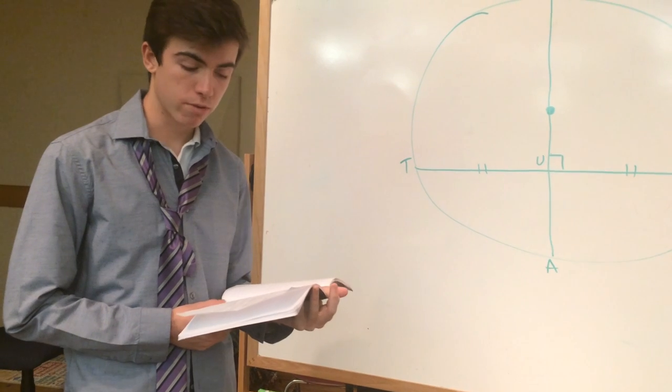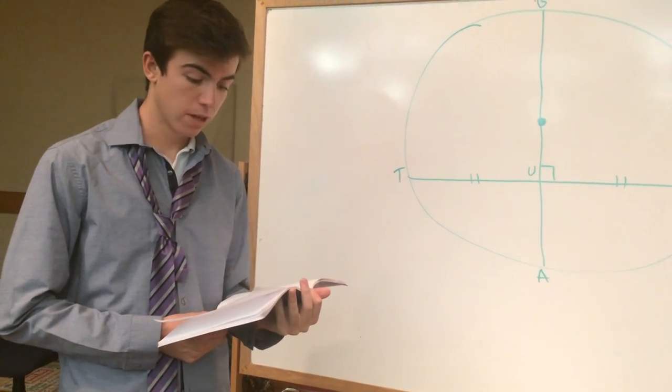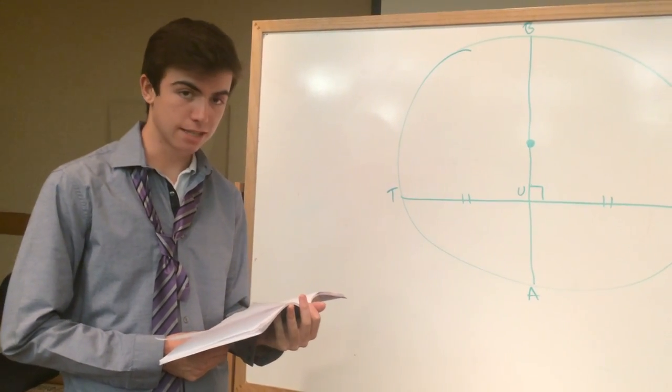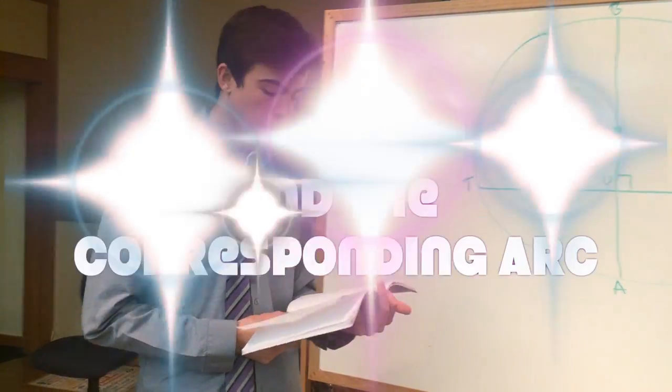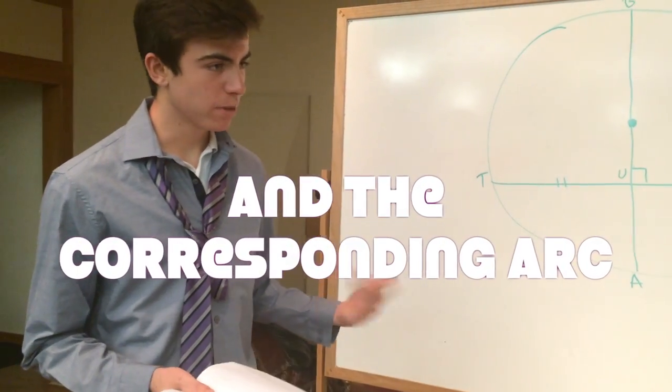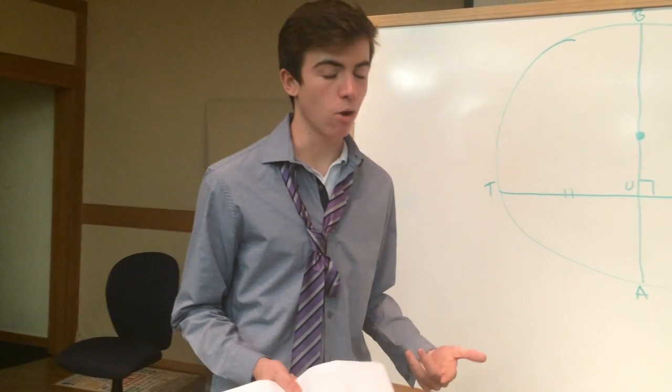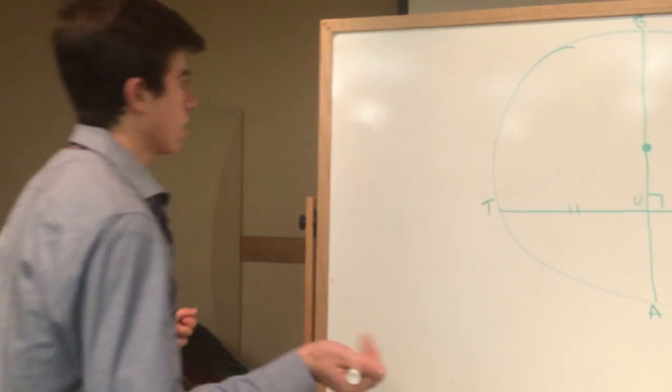So theorem 10.3 states that in a circle, if a diameter or radius is perpendicular to a chord, then it bisects the chord. Now I'm going to explain this because I need to know if this is actually true.